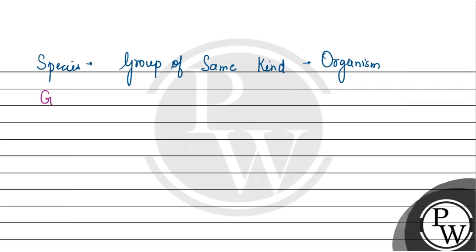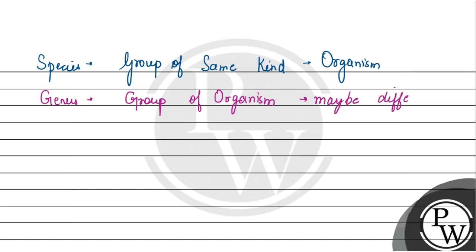If we talk about genus, the genus is a group of organisms that may be of different species.